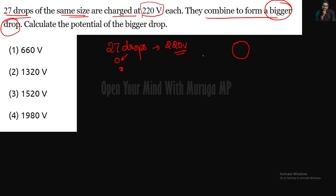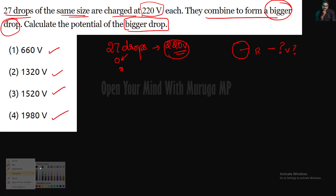If there is a small radius, it will be small r. Obviously, if there is a small drop, it will be small size. This is the given data. We need to calculate the potential at the bigger drop — what will be the potential? The options are 660, 1320, 1520, and 1980.